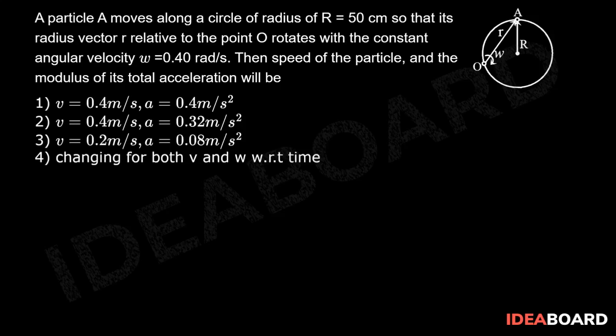The angular velocity of A about the center of circle omega_c = 2 omega.